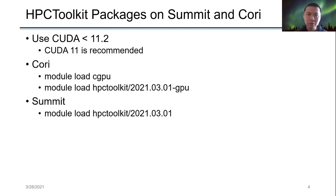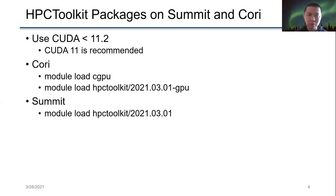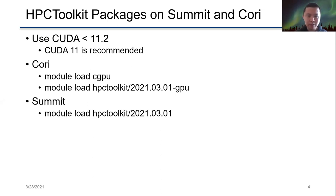To use HPCToolkit, for now we recommend compiling your application with CUDA version less than 11.2, since we don't have support for interpreting line information in CUDA 11.2. Any version greater than CUDA 11 is highly recommended. On Cori, you can load the CGPU module and load HPCToolkit. On Summit, you can load the default HPCToolkit module.